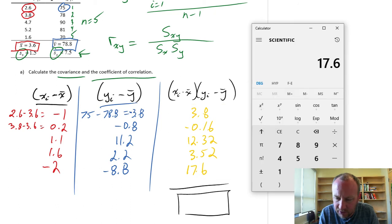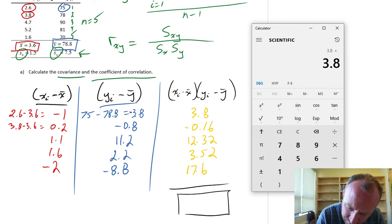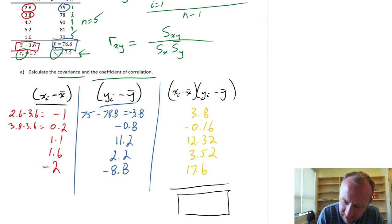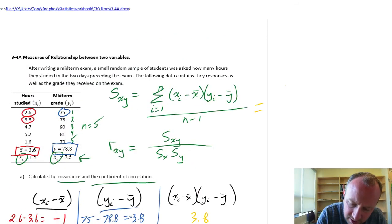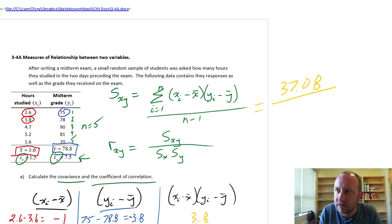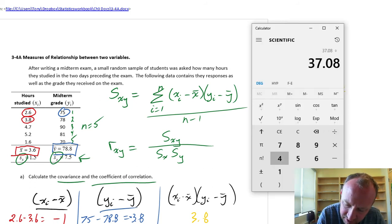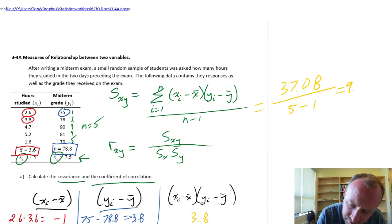Now we just have to add all of these up to get our numerator. 3.8 plus negative 0.16 plus 12.32 plus 3.52 plus 17.6, 37.08. So there's finally our numerator here, 37.08 divided by, now we need to look at our sample size. It's 5 minus 1. So that's just going to be 4 and 37.08 divided by 4, 9.27.